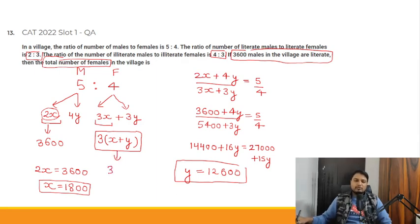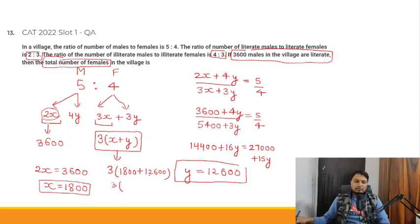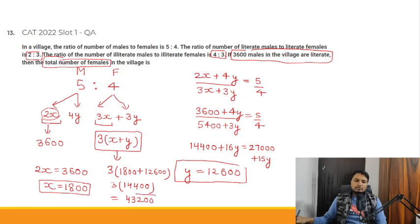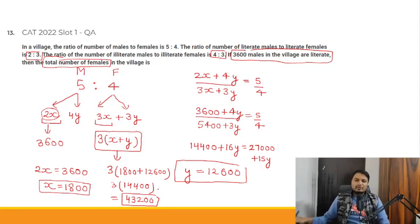Total females in the village = 3(x + y) = 3(1800 + 12600) = 3 × 14400 = 43,200. So the total number of females in the village is 43,200. This is the correct answer to this question.